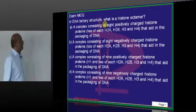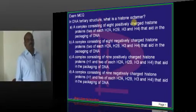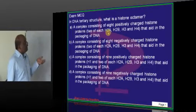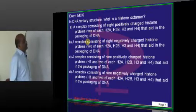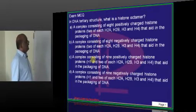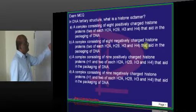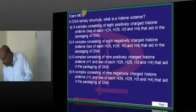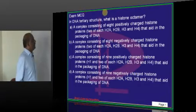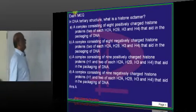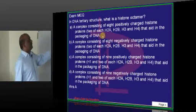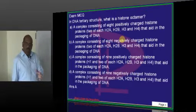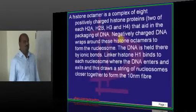In DNA territory structure, what is a histone octamer? The histone octamer is a complex of 8 positively charged histone proteins that help in packaging DNA — two each of H2A, H2B, H3, and H4. They all basically help in packaging the DNA.